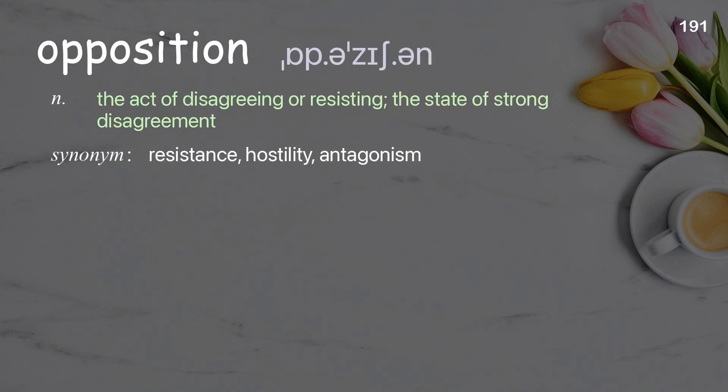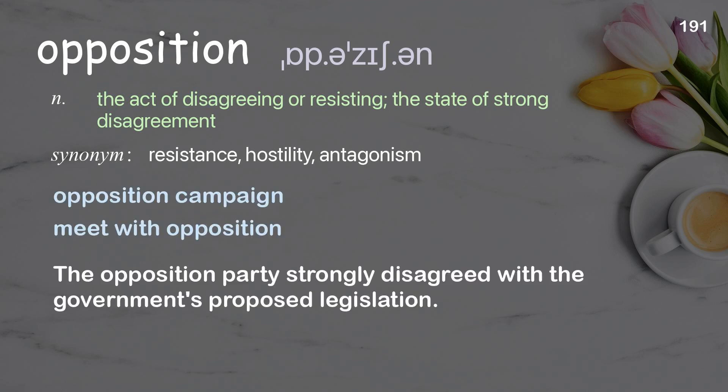Opposition: the act of disagreeing or resisting; the state of strong disagreement. Examples: opposition campaign, meet with opposition. The opposition party strongly disagreed with the government's proposed legislation.